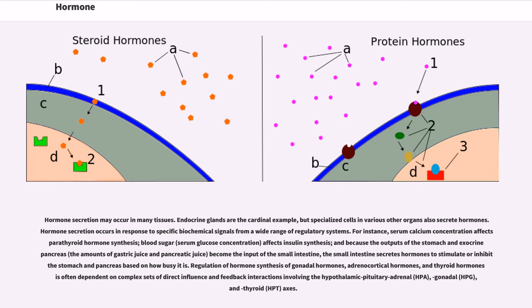For instance, serum calcium concentration affects parathyroid hormone synthesis. Blood sugar, serum glucose concentration, affects insulin synthesis. And because the outputs of the stomach and exocrine pancreas, the amounts of gastric juice and pancreatic juice, become the input of the small intestine, the small intestine secretes hormones to stimulate or inhibit stomach and pancreas based on how busy it is.